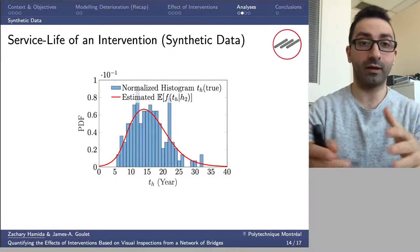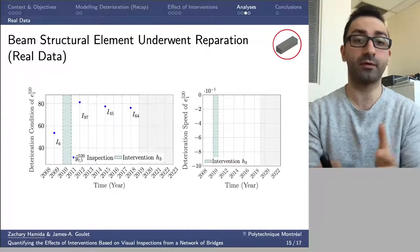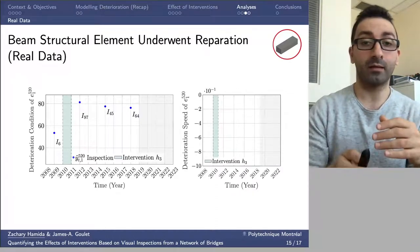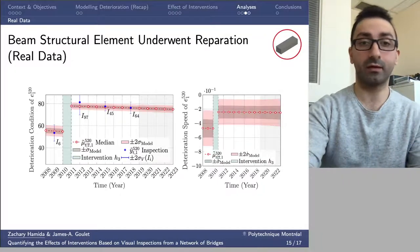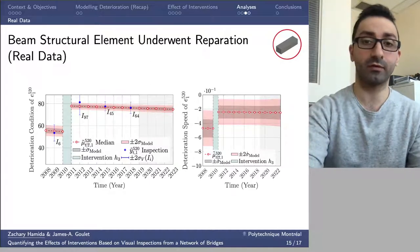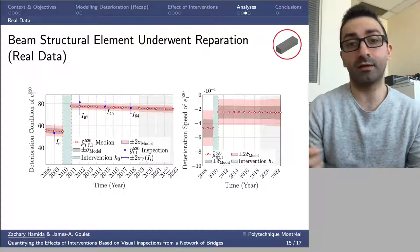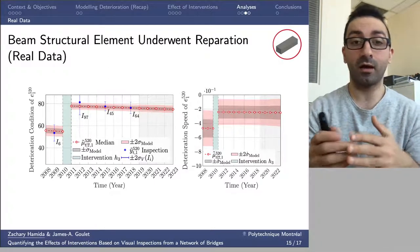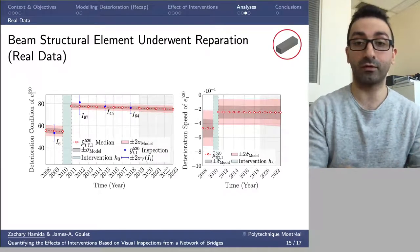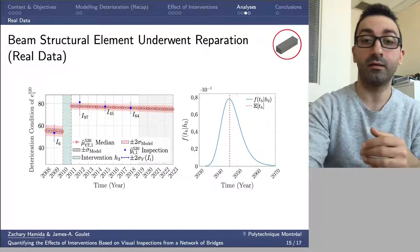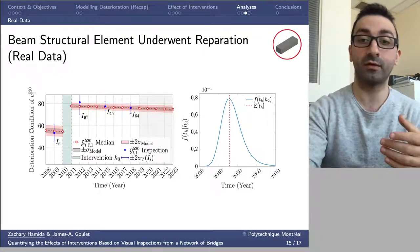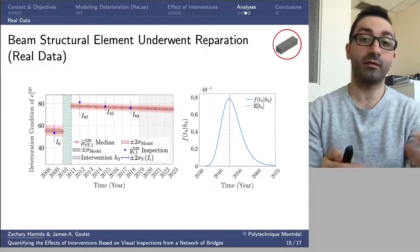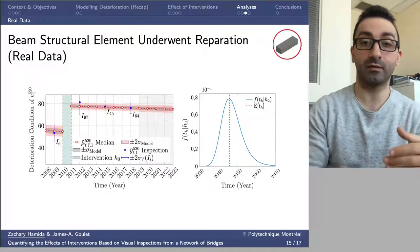Now looking at real data: for a beam structural element that underwent reparation, with condition on the left and speed on the right, the intervention happened in 2011. The model estimate before and after the intervention is visible in the graph for both condition and speed. Because this is real data, we don't have access to the true state. However, we can still estimate the service life of the intervention, and the results show that the return to the pre-intervention condition is most likely around 2045.